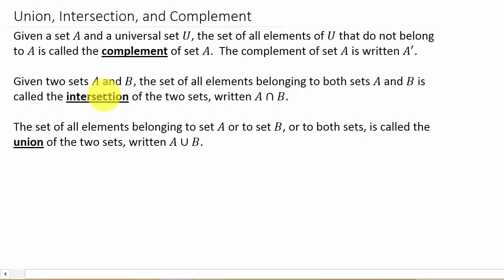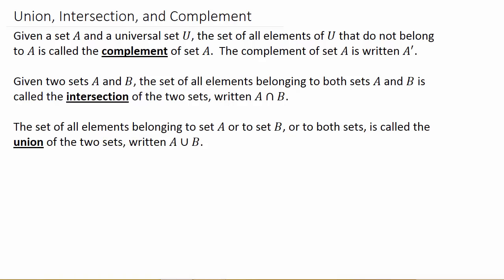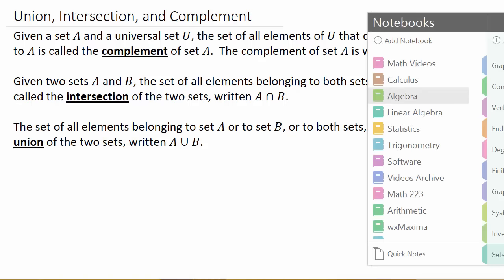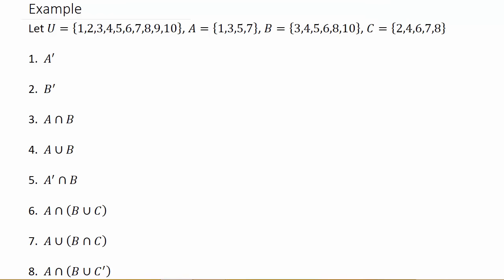So intersection is basically the elements the two sets have in common. And the union of two sets is just every element that's in both sets combined into one set. So let's go ahead and get started on the examples — I've got eight examples to work.